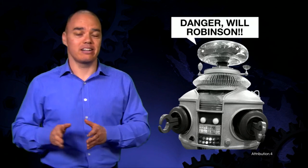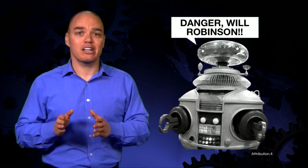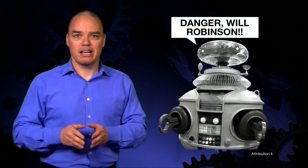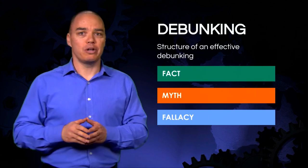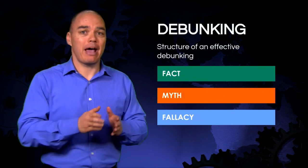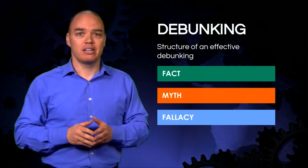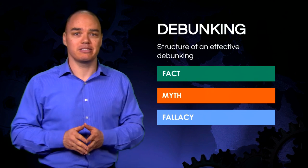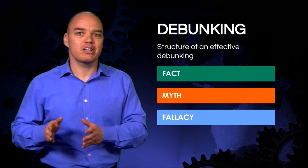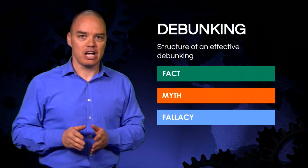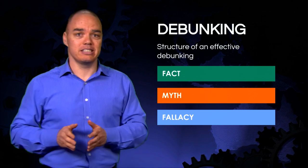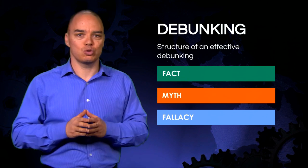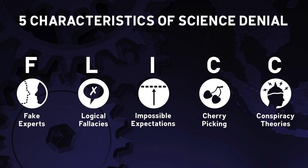Warning people puts them on guard so they're less likely to be influenced by the myth. When you present a fact and a myth about that fact, you're presenting two conflicting pieces of information. You help people reconcile that conflict by explaining the fallacy that the myth uses to distort the science.